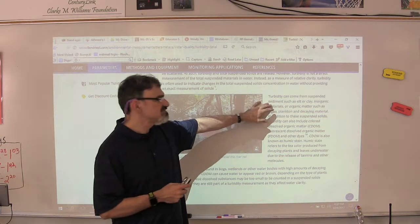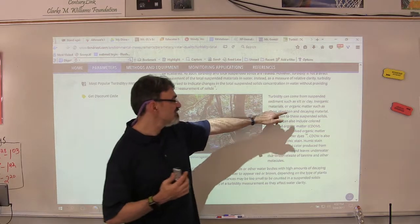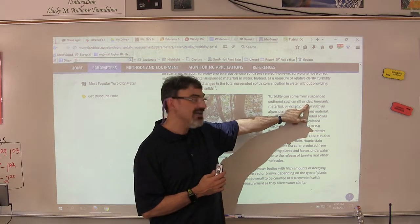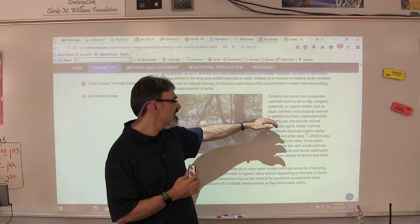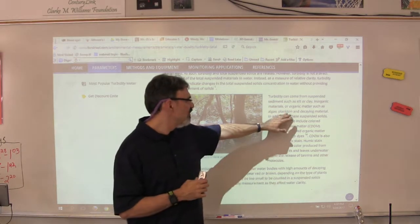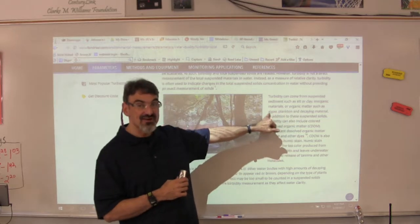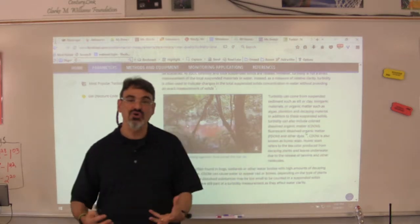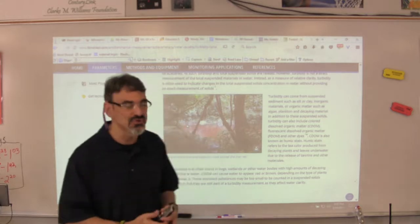Turbidity can come from suspended sediment. Sediment can refer to silt or clay or even inorganic materials such as different types of sand or bits of rock. Organic materials such as algae, plankton, and decaying material can also make the water cloudy or murky.